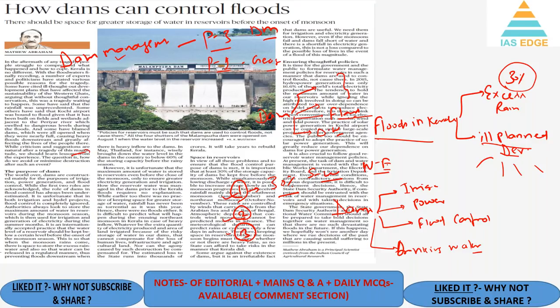A better rainfall forecast system and warning dissemination system need to be developed. Second, hydroelectric power generation should be gradually replaced by power generation from solar and wind energy, because hydel projects and dams disturb the natural flow of rivers. Third, the government needs to formulate water management policies for reservoirs so that dams are used to control floods and not cause them.